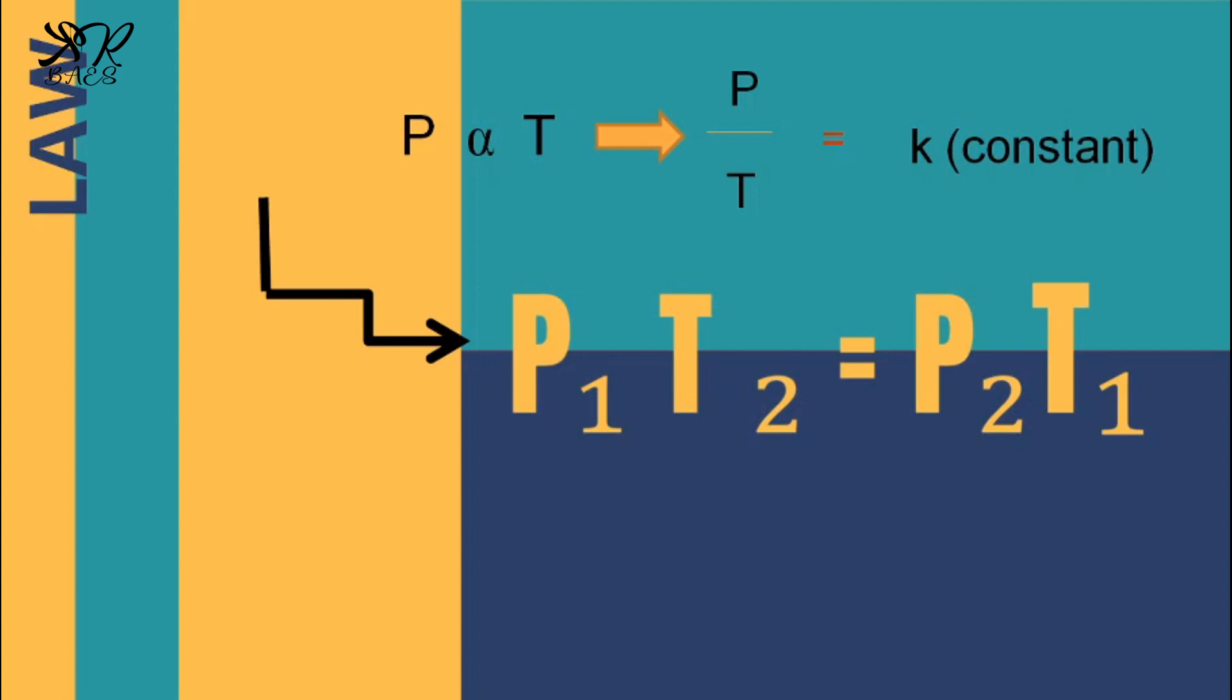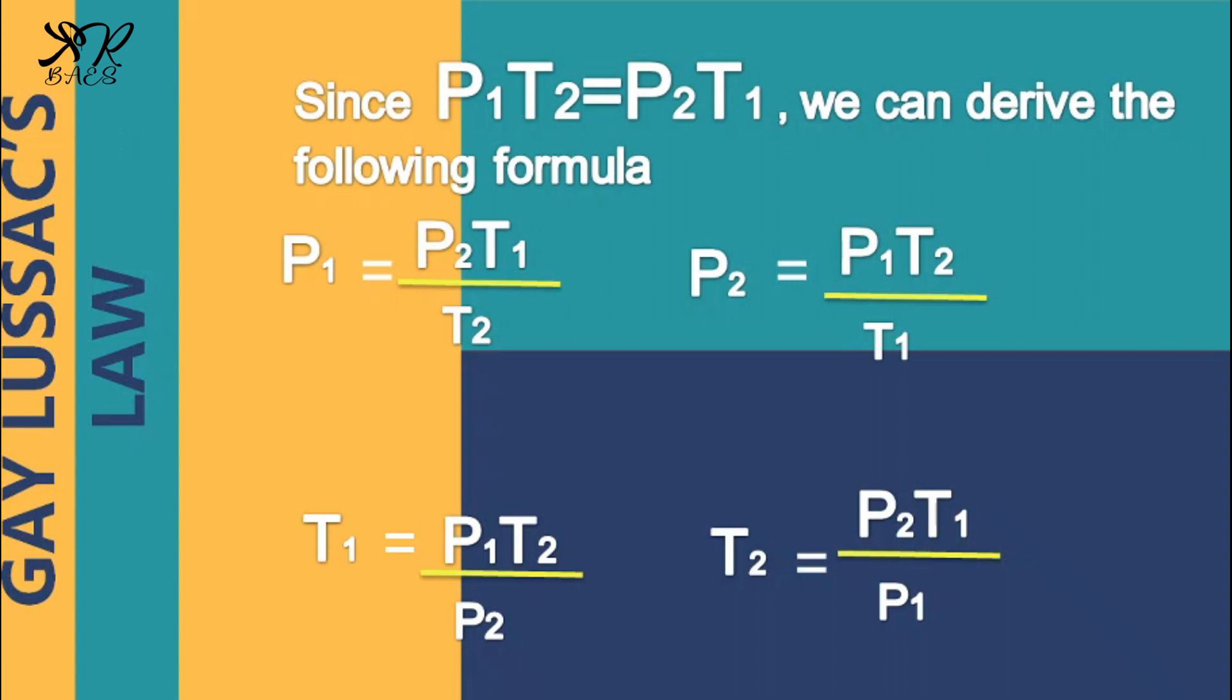It can be mathematically expressed as P is directly proportional to T, or P over T when the volume is constant. For any two sets of pressure and temperature, the equation can be stated as P sub 1 over T sub 1 is equal to P sub 2 over T sub 2. Thus, P sub 1 times T sub 2 is equal to P sub 2 times T sub 1.